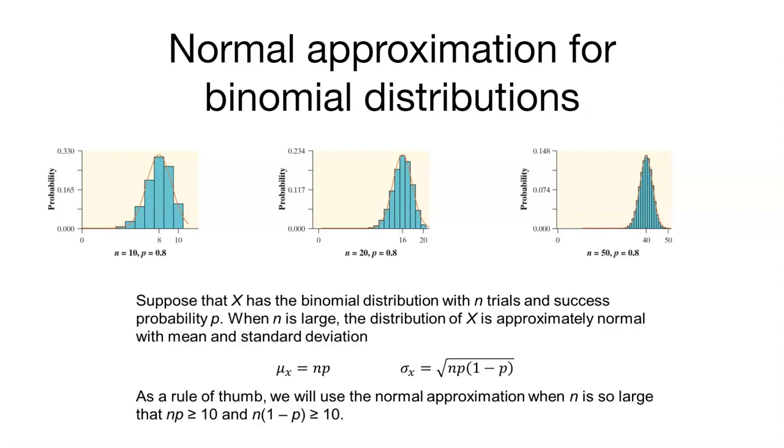We can say that if X has a binomial distribution with n trials and probability of success P, when n is large, the distribution of X is approximately normal with a mean and standard deviation. Remember, we found these means and standard deviations in the previous slides.